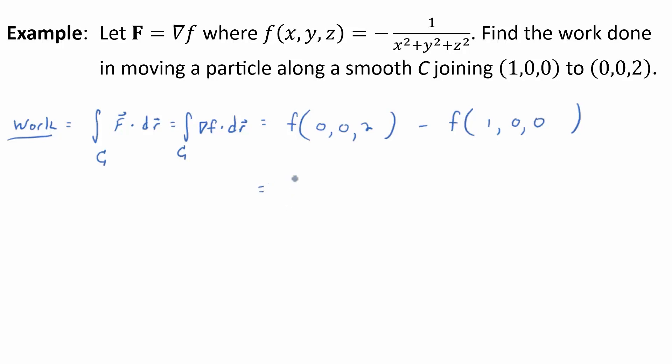So, if we plug in 2 for z here, so we're plugging in 2 right here, what do we end up with? So, f of 0, 0, 2 is equal to negative 1 over 4. Right? 2 squared?